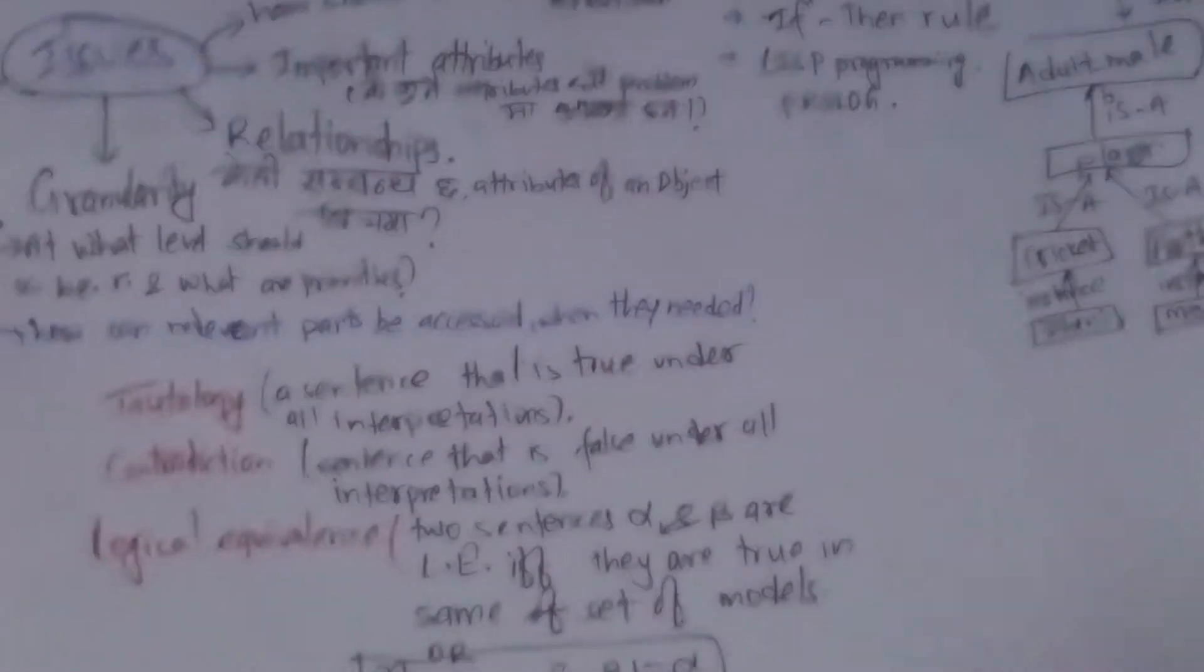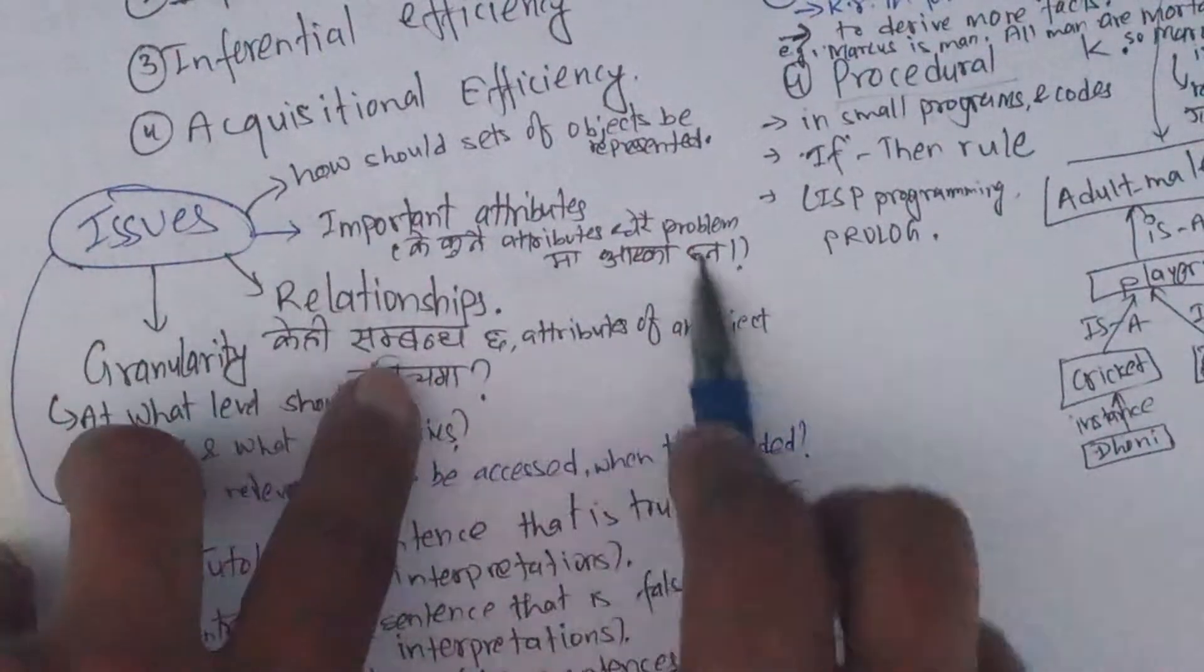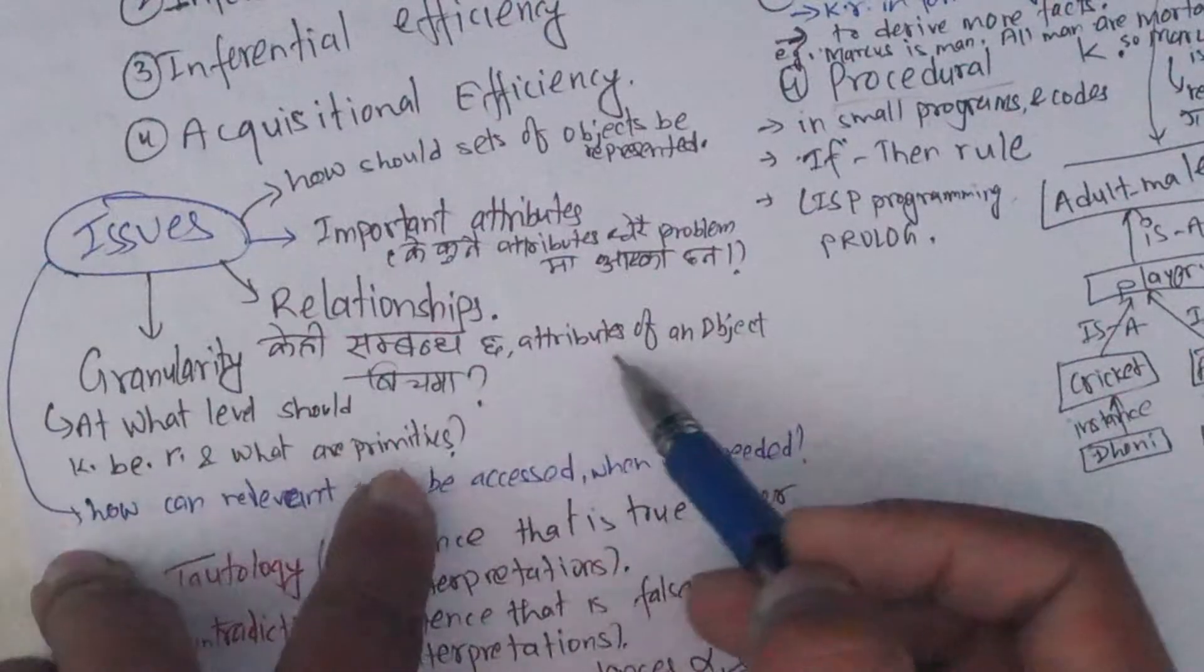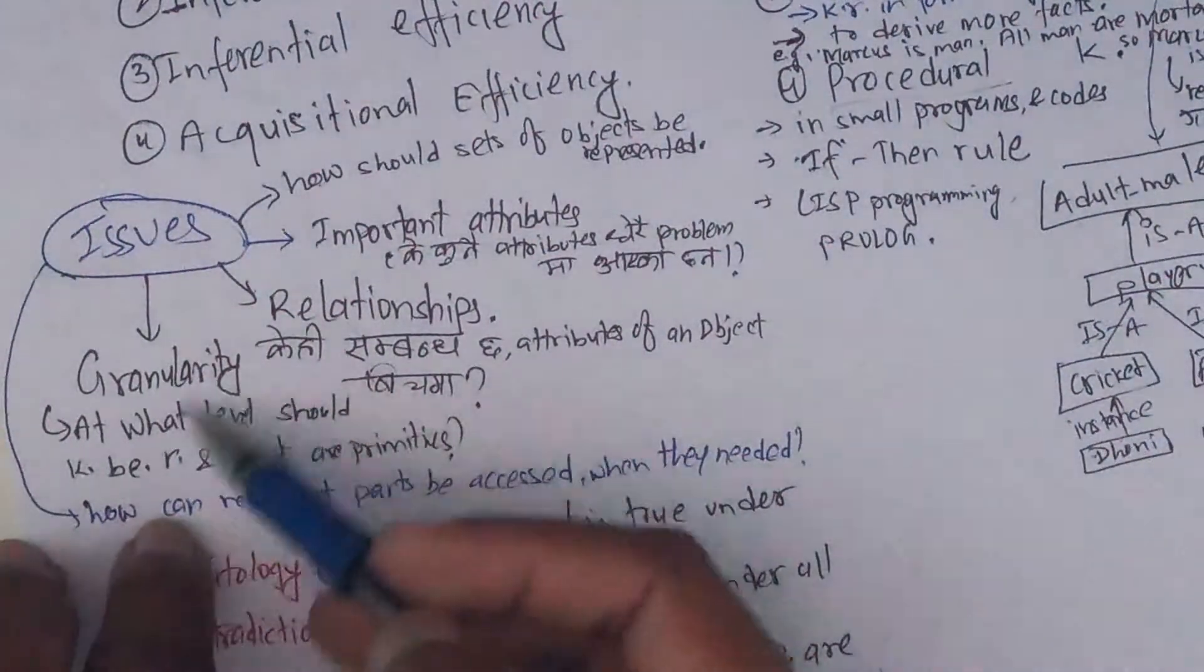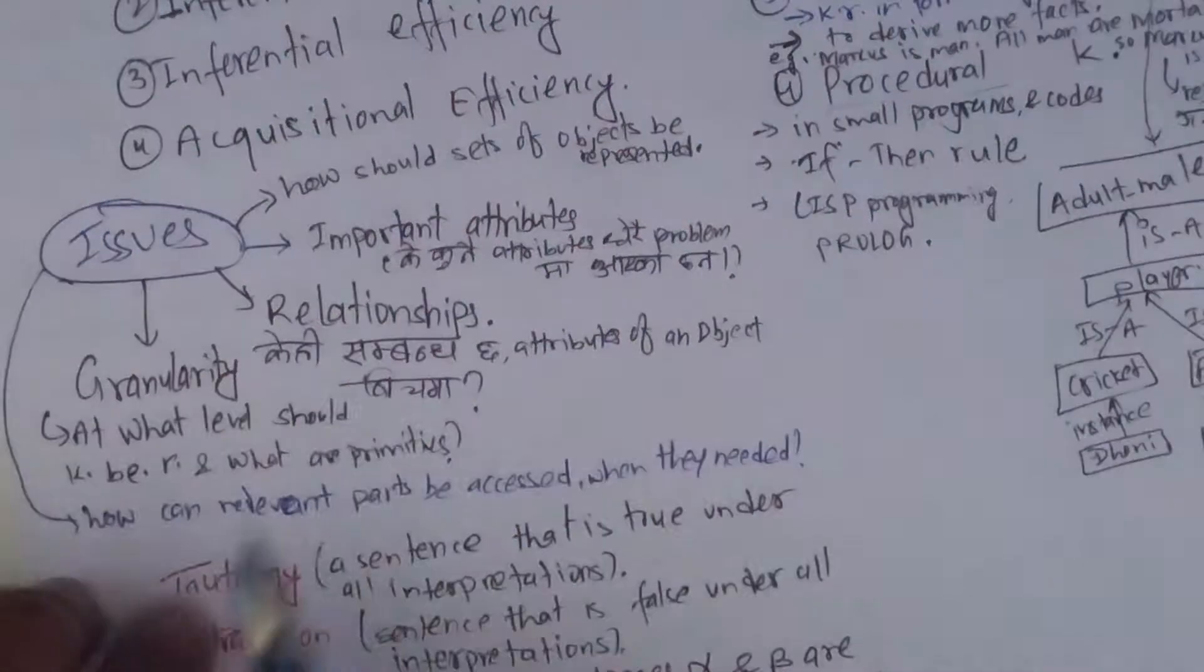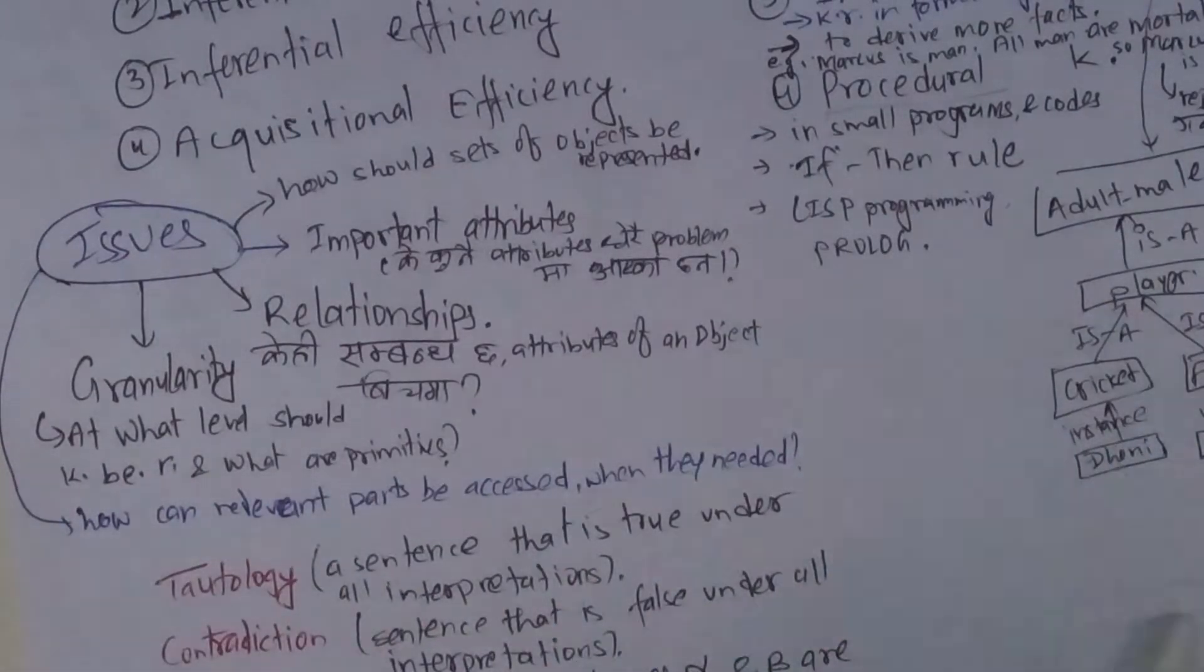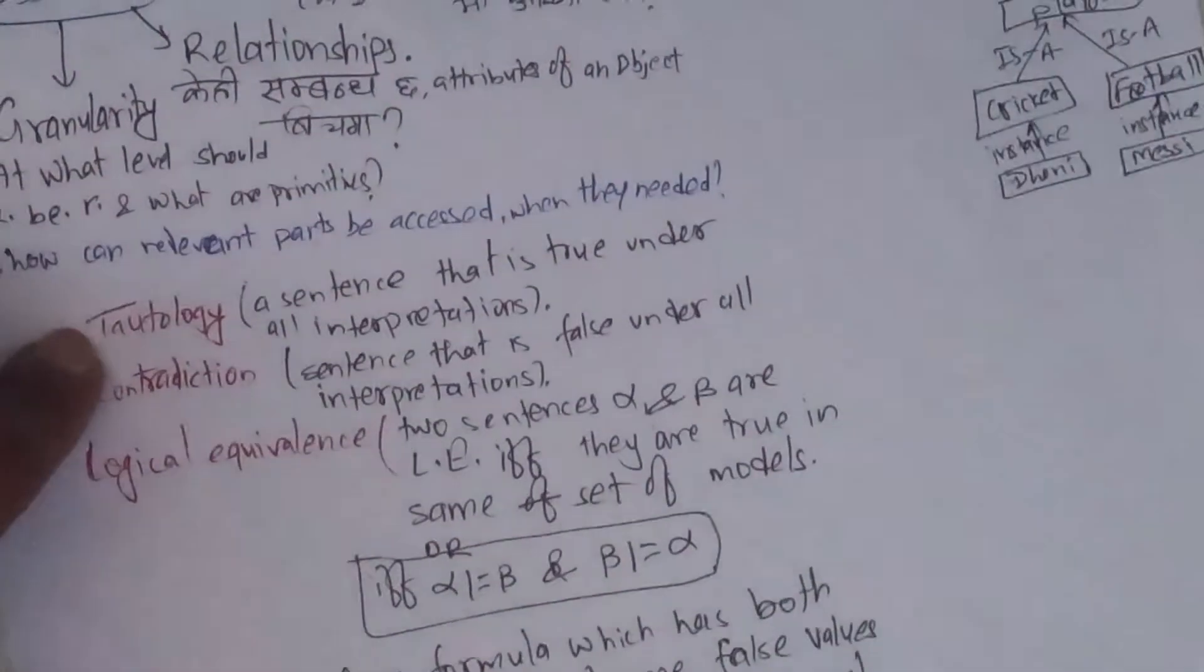Issues - what attributes can be found in the problem? What relationships can be found? How should a set of objects be represented? How can relevant parts be accessed when they are needed?